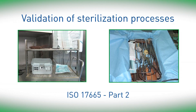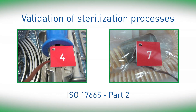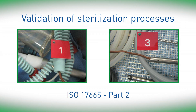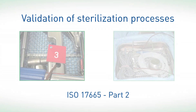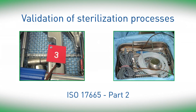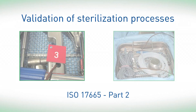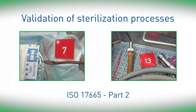In order to ensure that every sterilization process leads to a demonstrably successful sterilization, the process is subjected to a validation. In this situation, proof is provided that the process can be reproduced — that is, that the parameters required are maintained for every batch, provided that the operator maintains the conditions determined for the validation.